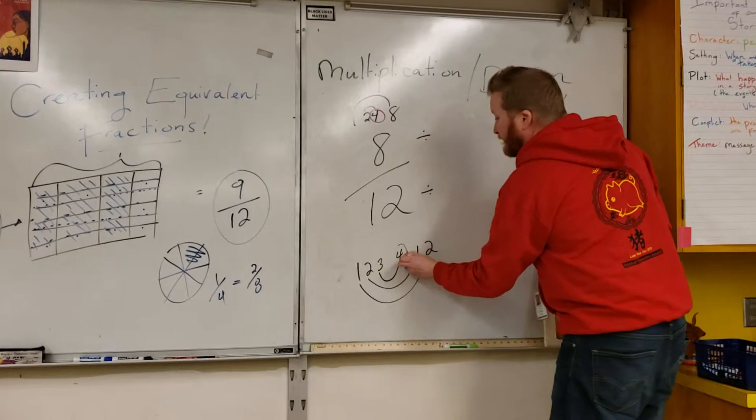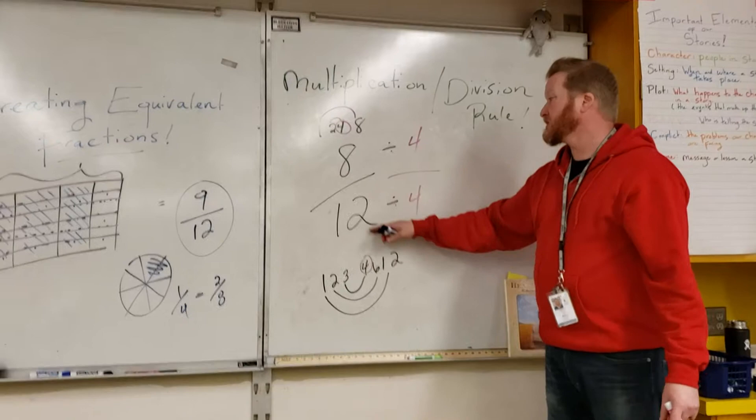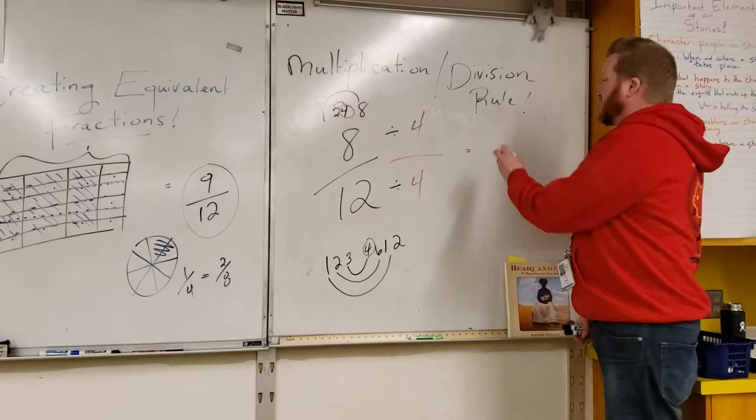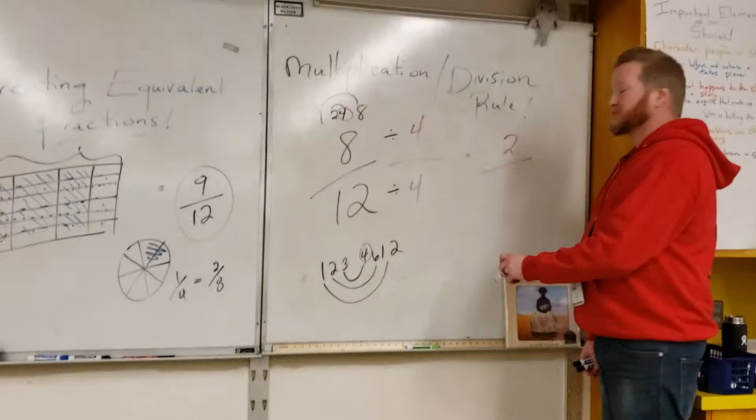So, we are going to take four. We are going to divide eight by four. Much like the multiplication rule, we have to divide the numerator and denominator by the same number. Quincy, what is eight divided by four? Two. Lillian, what is twelve divided by four? Three. We have an equivalent fraction.